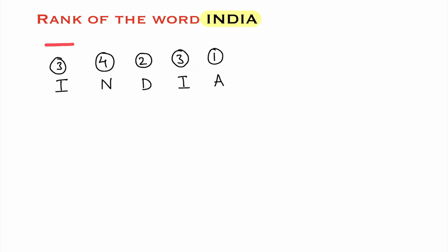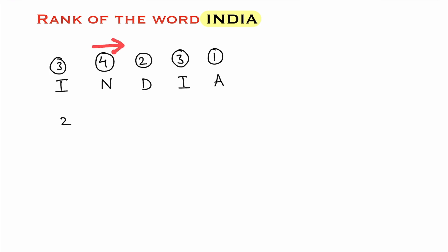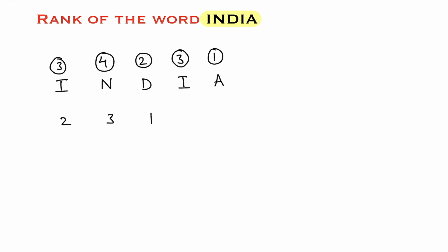Now observe the right side of each number. Right side of three — how many numbers are there which are smaller than three? Here two numbers are smaller than three on the right side, so you write two. Right side of four — how many numbers are smaller than four? Total three numbers are there, so you write three. Right side of two — only one number is smaller than two, so you write one. Right side of three — only one number is smaller than three, so you write one. Right side of one — nothing is smaller than one, so you write zero.